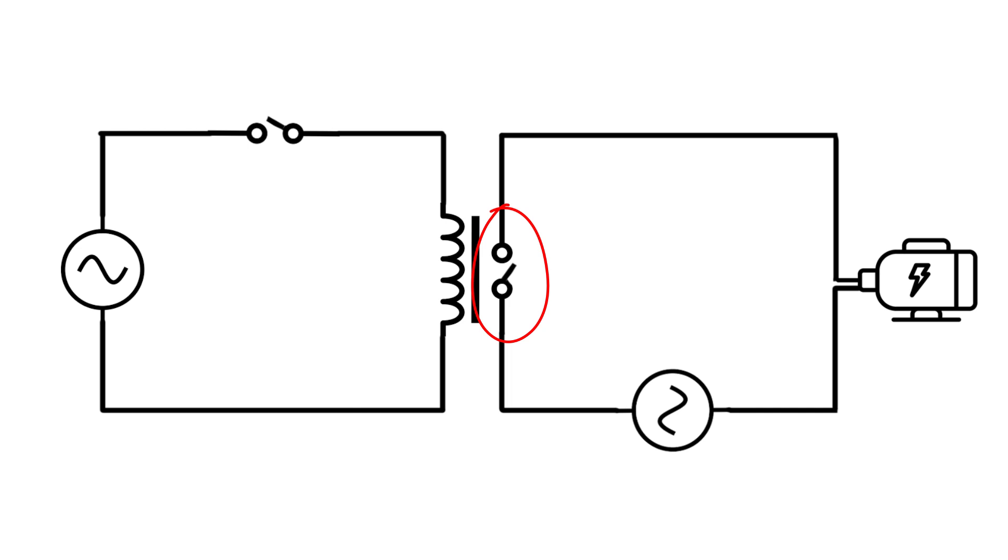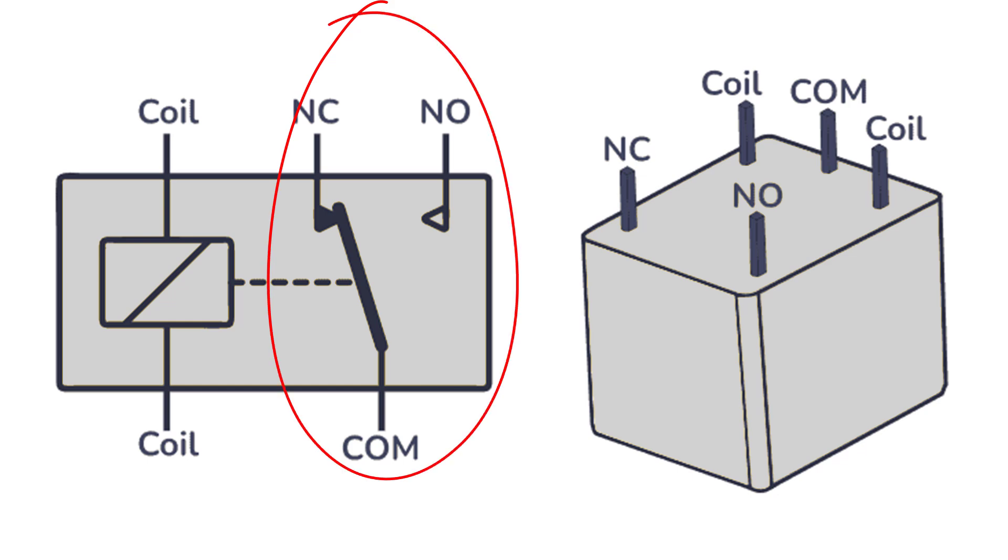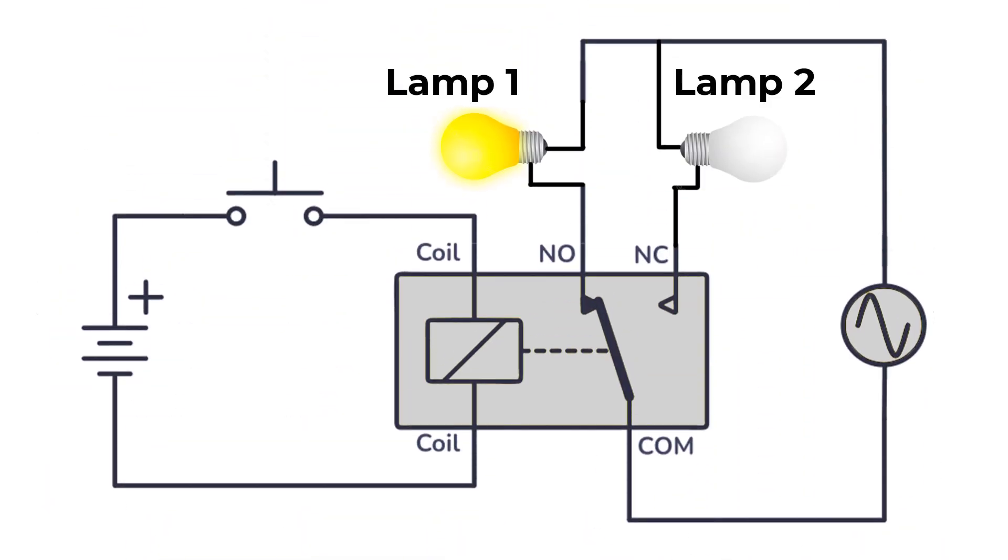That will be closed when the relay coil A1 and A2 is energized. Other contacts could be single pole double throw, which have one input common and two output pins.